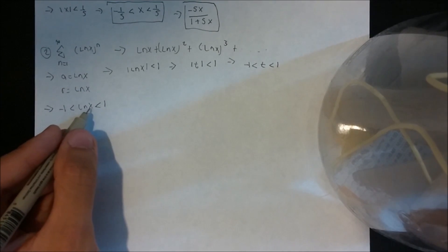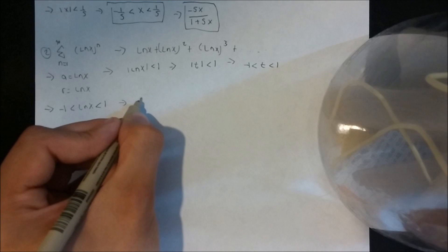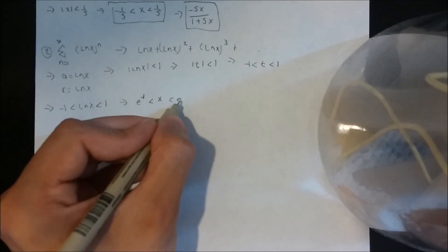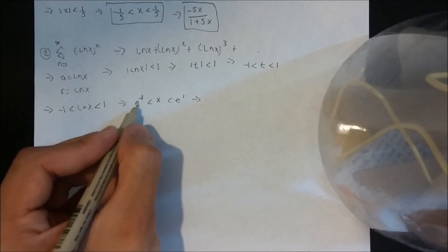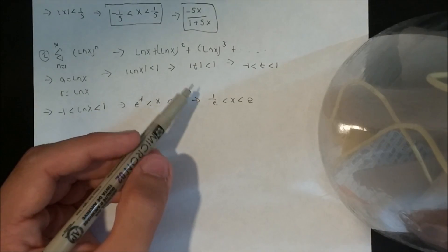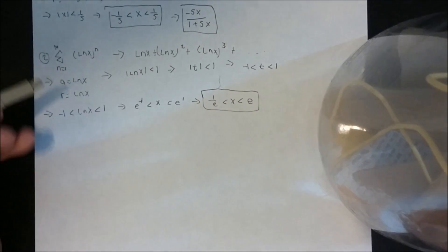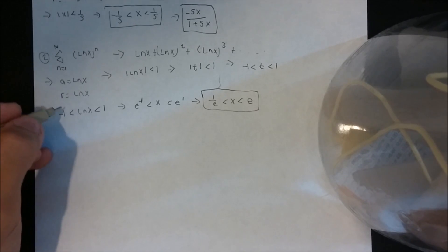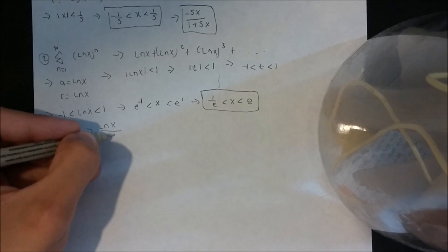To get rid of the ln x, we raise everything to the power of e. So e raised to the negative 1 is less than x, less than e raised to the 1. We did that to get rid of the ln, so e to the negative 1 is just 1 over e, which is less than x, which is less than e. So this would be the values of x for which the series converges. The sum of the series for those x values is a over 1 minus r, so that would be ln x over 1 minus ln x.